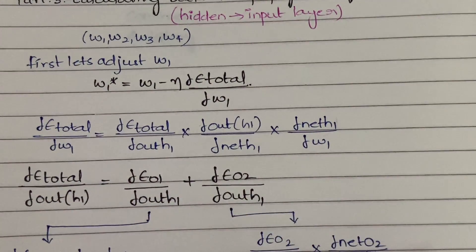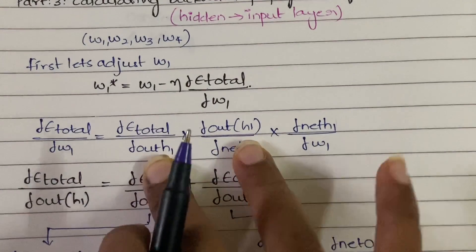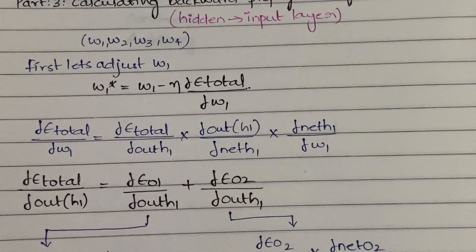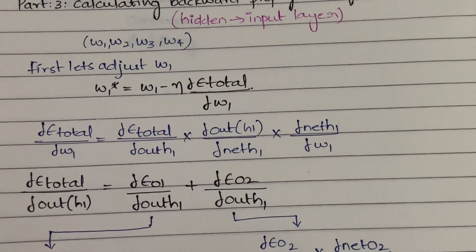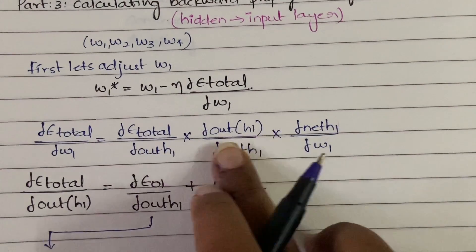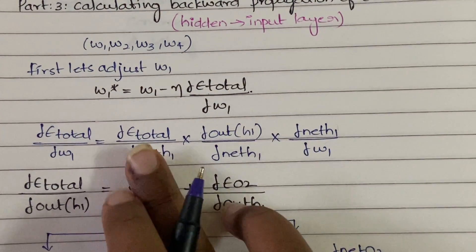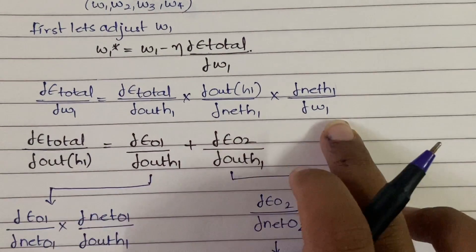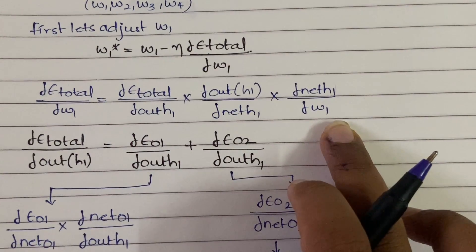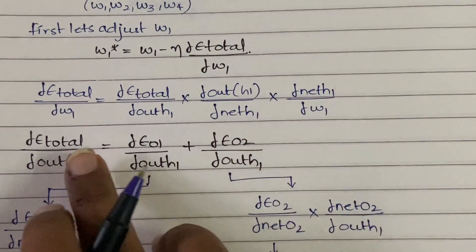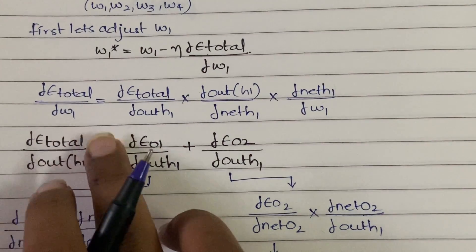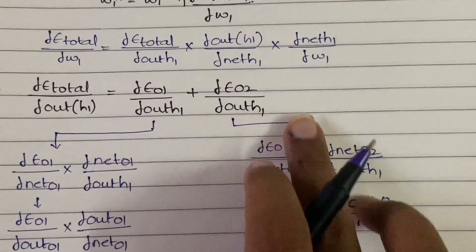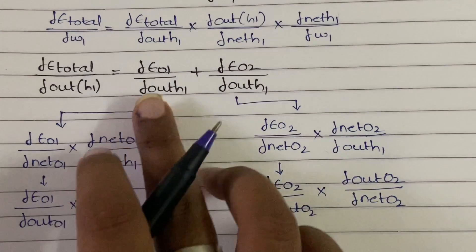After applying the chain rule, we get three terms. In the previous video (Part 2), finding each term was not very complicated. But now, finding particularly the first term — dE_total/d(out_h1) — is very complicated, while the other two are simpler. To get dE_total, you add E_o1 and E_o2, so you write: (δE_o1 + δE_o2) / δ(out_h1). After splitting, you get two sub-terms.